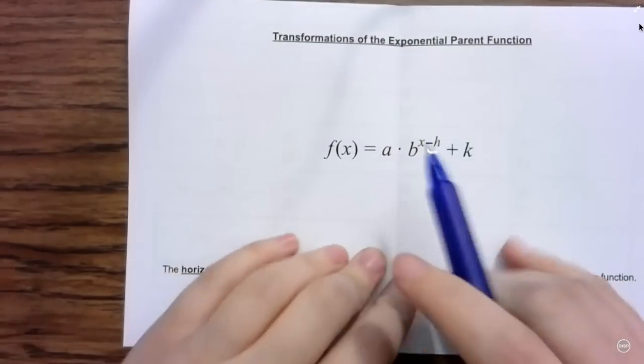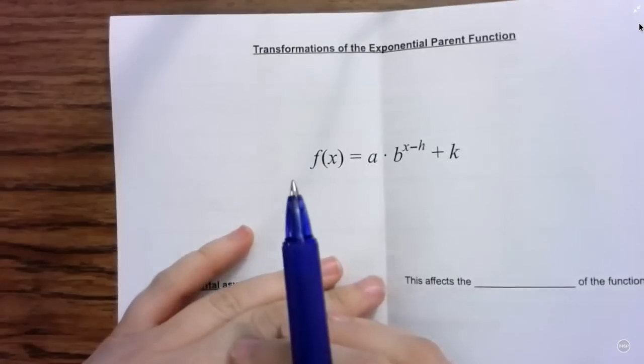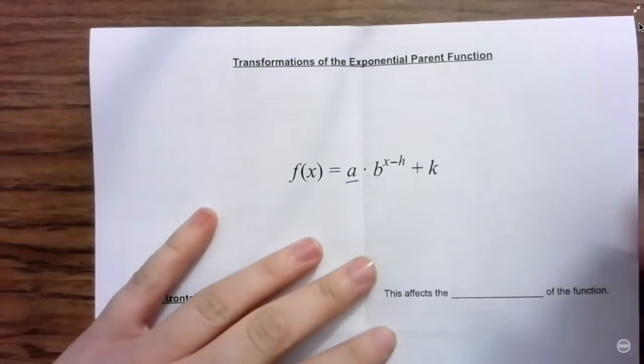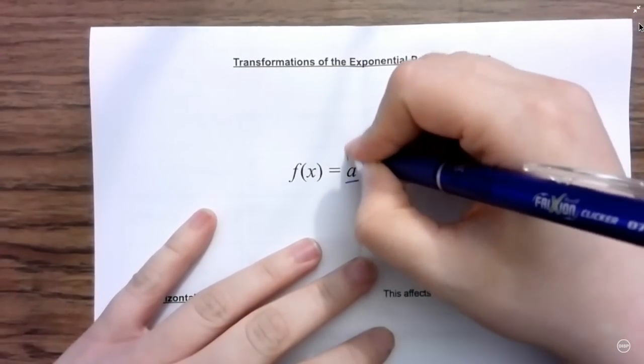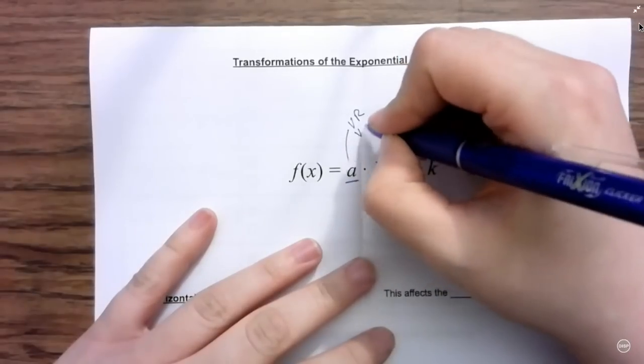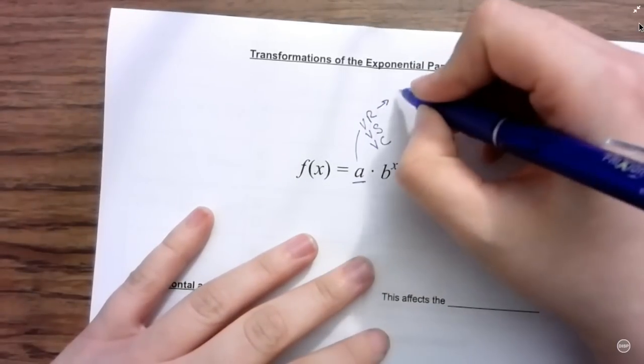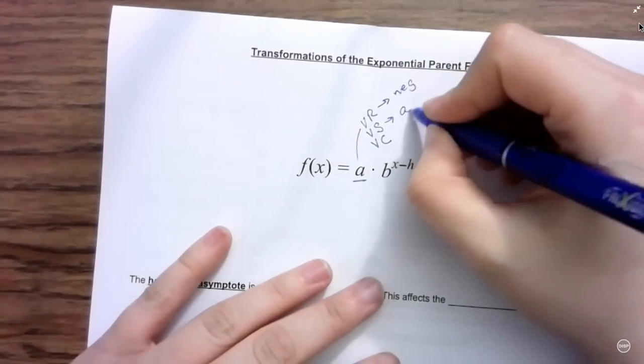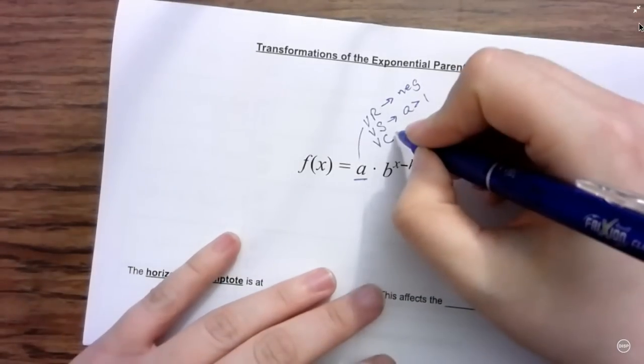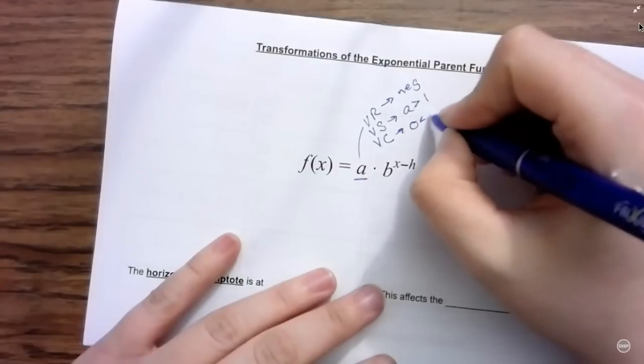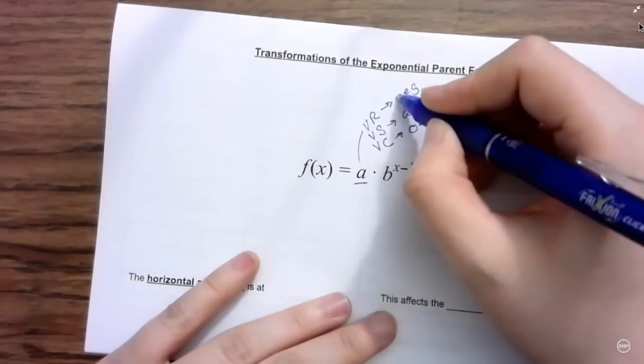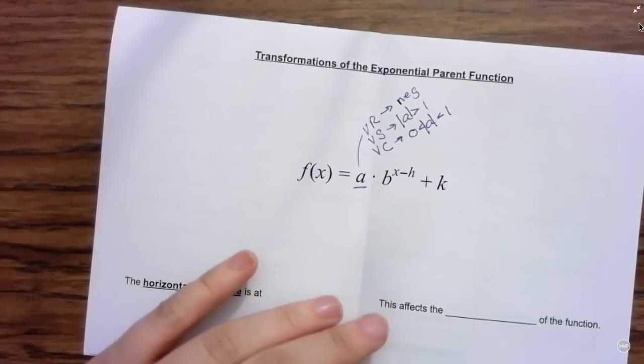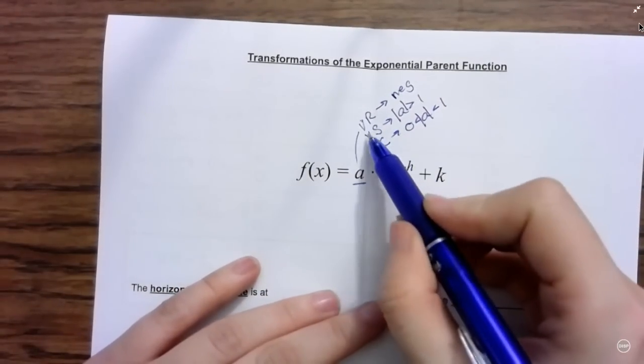Starting off with transformations, these are roughly the same transformations you're used to seeing for all our other types of functions. You have your a value, multiplied in front of the function, which will give you vertical reflection, vertical stretch, or vertical compression. Remember, reflection is if a is a negative number, vertical stretch is if a is greater than 1, and vertical compression is if a is between 0 and 1. I'm going to put absolute value there because if you have say a negative 4 for your a value, that's both a reflection and a stretch.